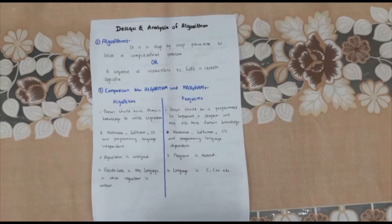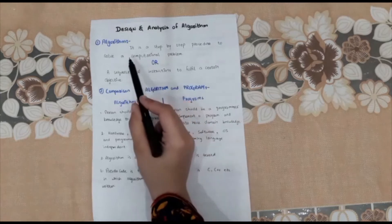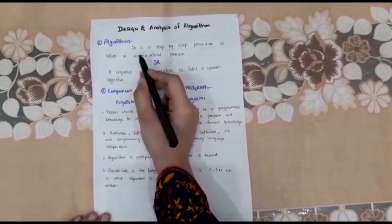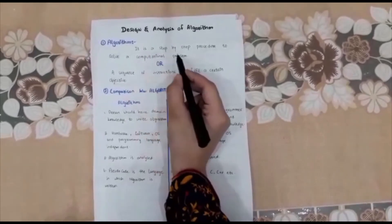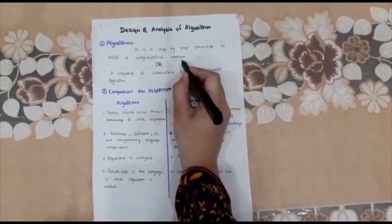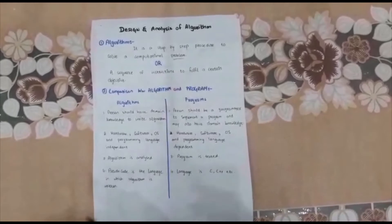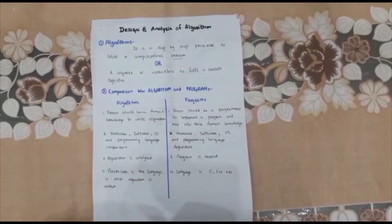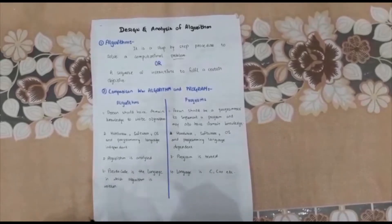So first, let's start with algorithm. The first question that arises in our mind is: what is an algorithm? An algorithm is basically a step-by-step procedure to solve a computational problem. You can't solve any problem without following a step-by-step procedure, because when you have a determined step-by-step procedure, you will find a solution.